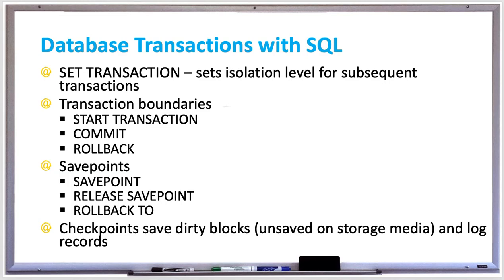It does this by suspending database processing, writing all unsaved logs and checkpoints to the log file, and then writing all dirty blocks to storage media and resuming database processing. A fuzzy checkpoint saves dirty blocks while it continues processing to help improve database availability or uptime.